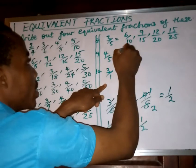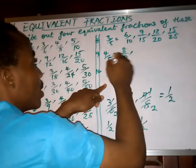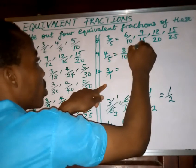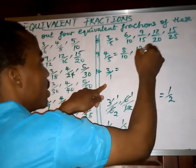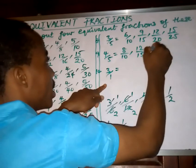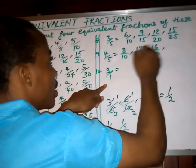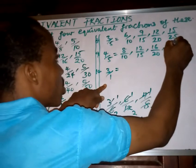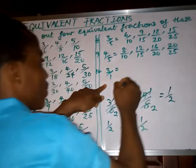For 4 over 5: multiply by 2 — 2 times 4 is 8, 2 times 5 is 10. Multiply by 3 — 3 times 4 is 12, 3 times 5 is 15. Multiply by 4 — 4 times 4 is 16, 4 times 5 is 20. Multiply by 5 — 5 times 4 is 20, 5 times 5 is 25.